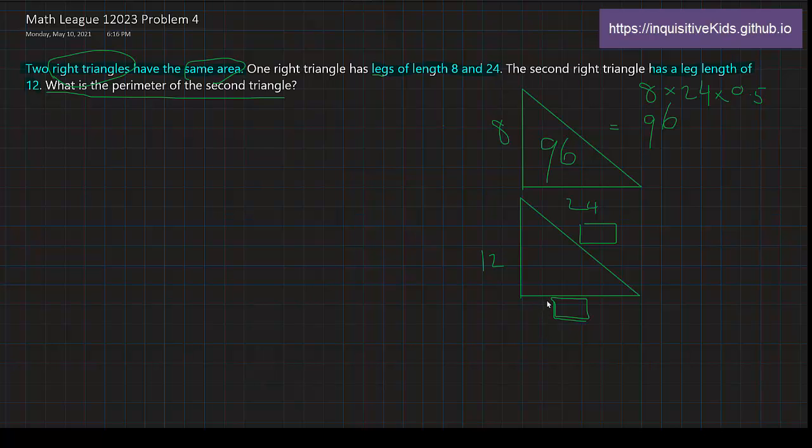Let's just first call this side x. So, 12 times x times 0.5 is equal to 96. So, that means that 0.5x is equal to 8. Now, if we divide by 0.5 on both sides, it means that x is equal to 16. So, we can fill in this value over here.